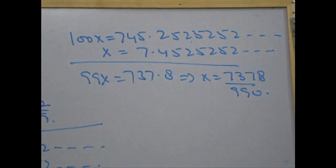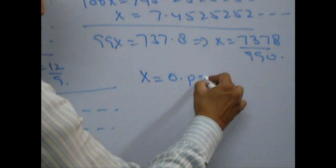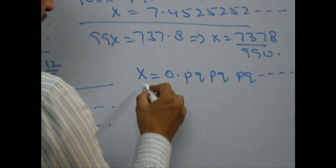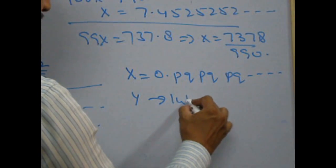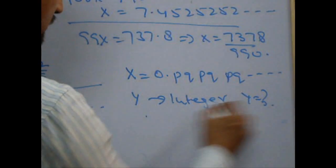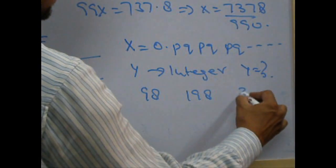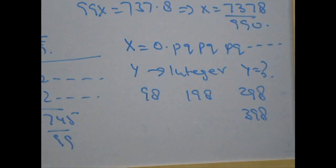Now, let's take a question which is actually an old CAT question. And this is, x is 0.pq, pq, pq and so on. x is multiplied by y and the result is an integer. What can y be? Choices are 98, 198, 298 and 398. Think over it.